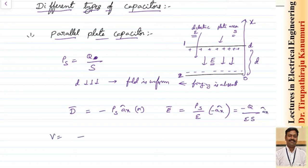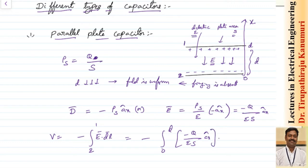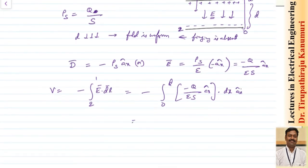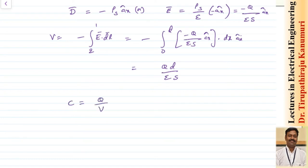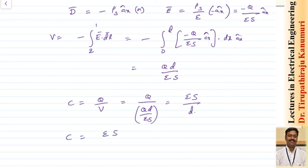To calculate the potential between the two plates, we integrate from plate 2 to plate 1: V equals minus the integral of E·dL. Moving from zero to d, this becomes the integral of minus q over epsilon·S in the ax direction, dot product with dx·ax. Integrating gives V equals q·d divided by epsilon·S. Since capacitance C equals q divided by V, substituting gives C equals epsilon·S divided by d. So the capacitance of a parallel plate capacitor is epsilon times area divided by distance, where epsilon equals epsilon-naught times epsilon-r.